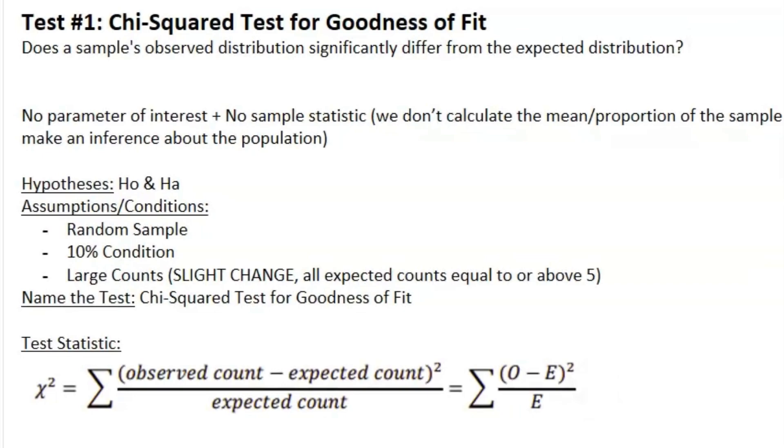The first type of test for chi-squared is a chi-squared test for goodness of fit. The key question I like to ask myself is: does the sample's observed distribution significantly differ from the expected distribution? That's a mumbo jumbo jargon term, but let's think about it in terms of something more simple, like M&Ms.